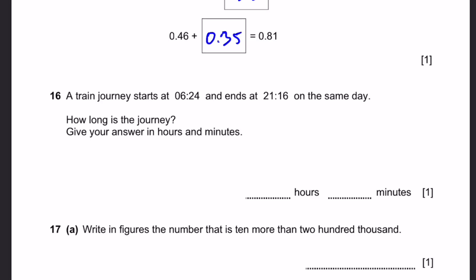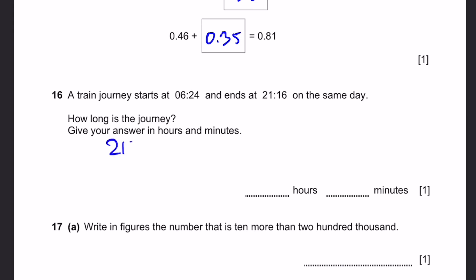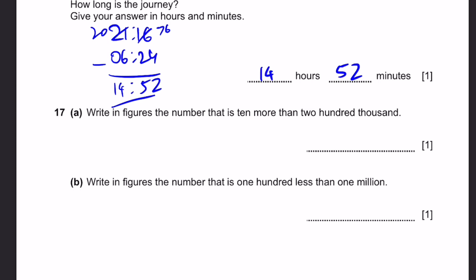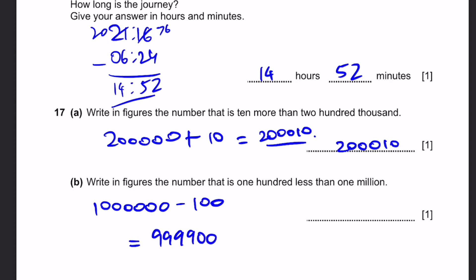Question 16. A train journey starts at 06:24 and ends at 21:16 on the same day in 24 hour time. How long is the journey? Give your answer in hours and minutes. So we just subtract 21:16 minus 06:24. We borrow from here, 76 minus 24. Now it becomes 20. And that's 14 hours and 52 minutes. Question 17. Part A: Write in figures a number that's 10 more than 200,000. That would be 200,000 plus 10, which is 200,010. Part B: Write in figures a number that is 100 less than 1,000,000. That would be 1,000,000 minus 100, which equals 999,900.